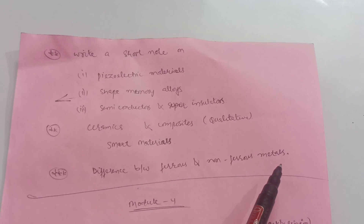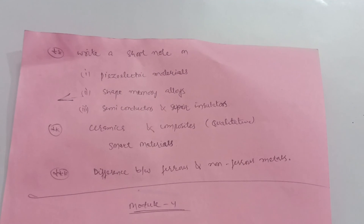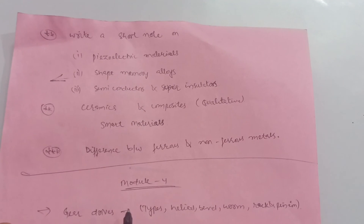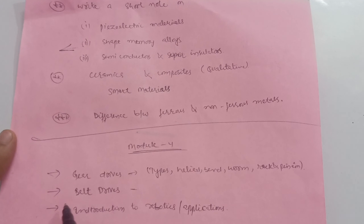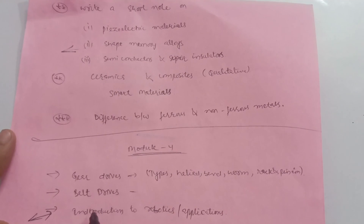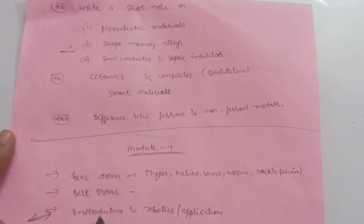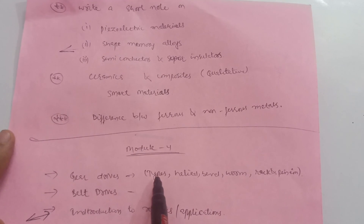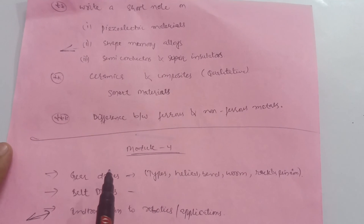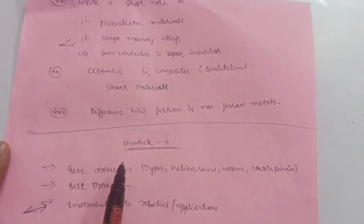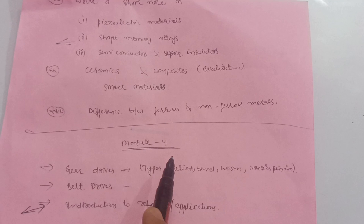As you know, there is a vast syllabus in this subject so it is not possible to cover everything. For Module 4, there are three chapters: gear drives, belt drives, and an introduction to robotics. The robotics part is somehow easy and you can easily refer to it — it's according to your choice. I suggest you go through the robotics part and its applications. For gear drives: helical gear, bevel gear, worm gear, and rack and pinion — go through these concepts.